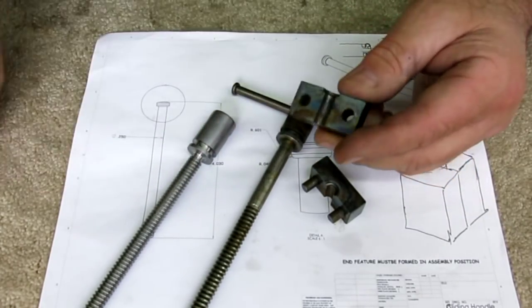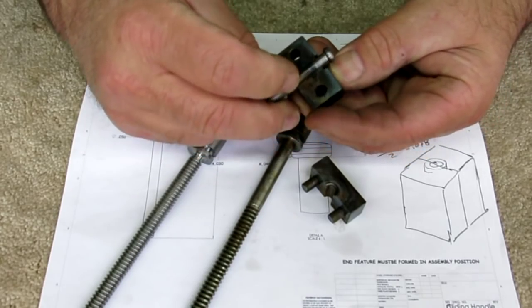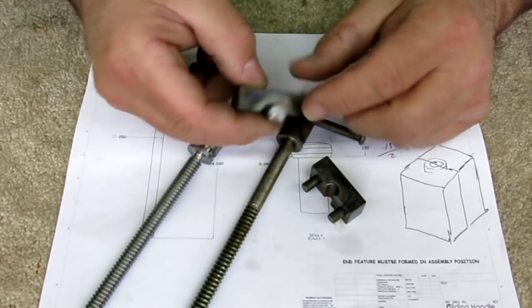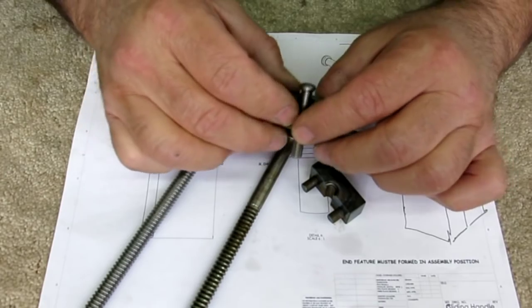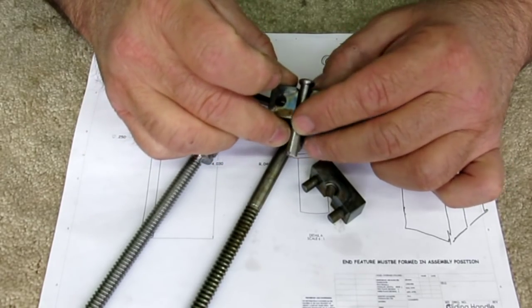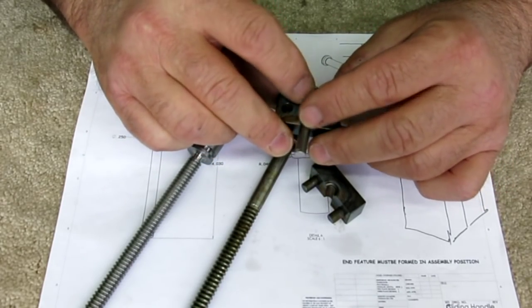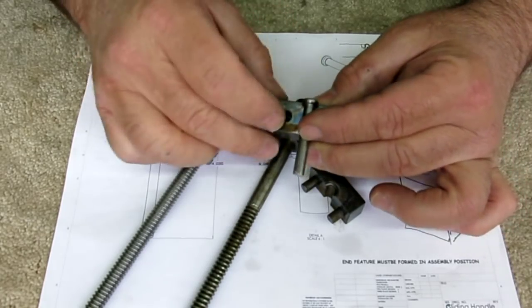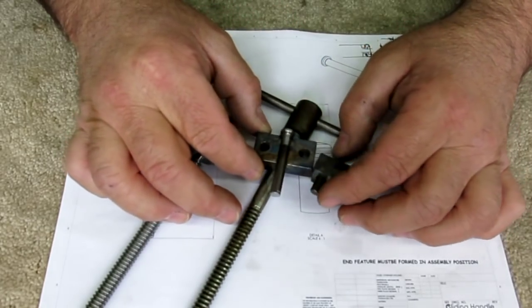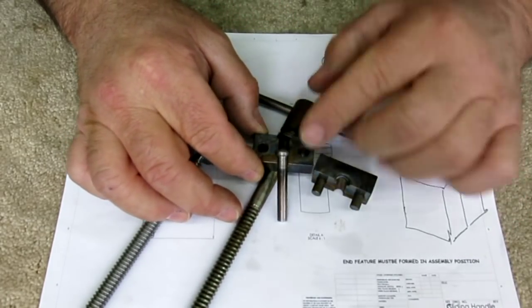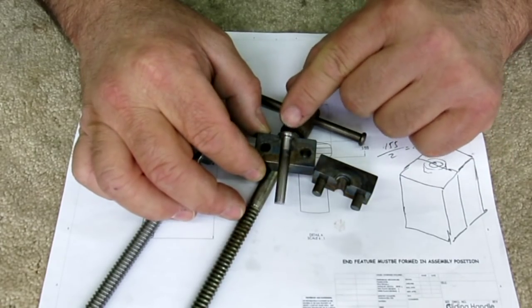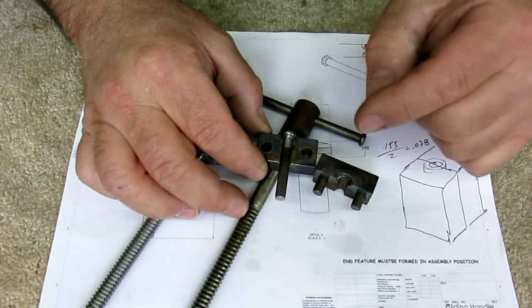And so the general idea is you clamp this, and then you heat that up nice and hot, and then you pound that and upset that hot metal into that cavity like that.